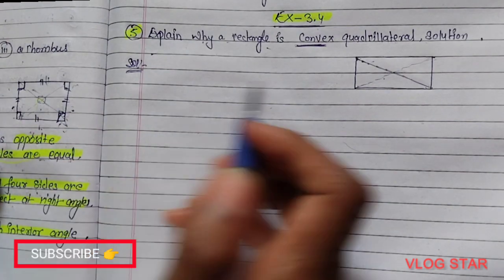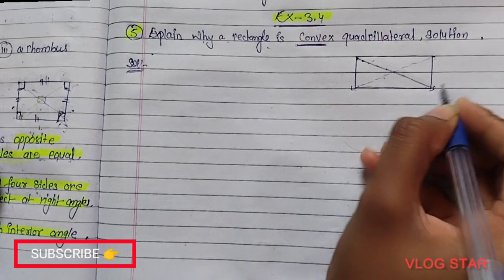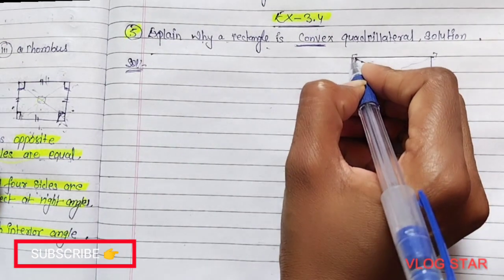So it will be a convex quadrilateral. Or you can see here the vertices are pointing outside, so it is a convex quadrilateral.